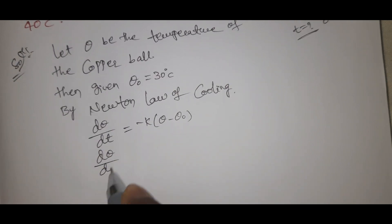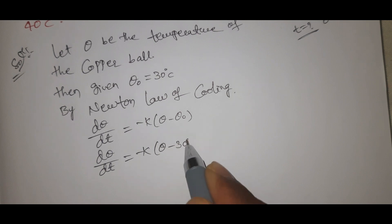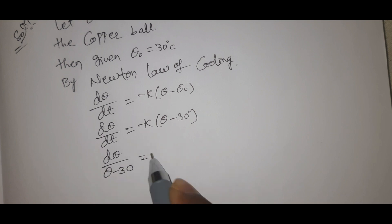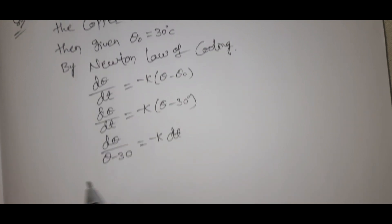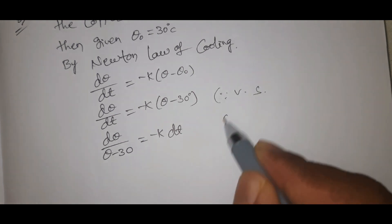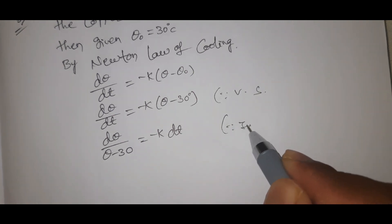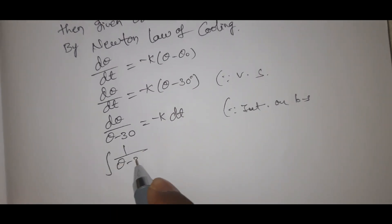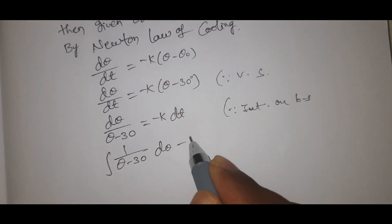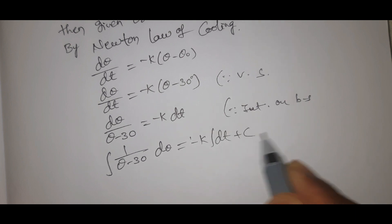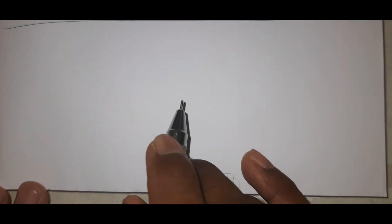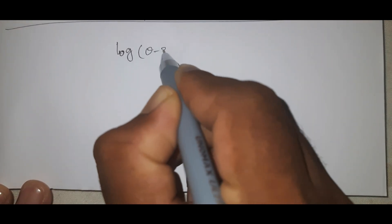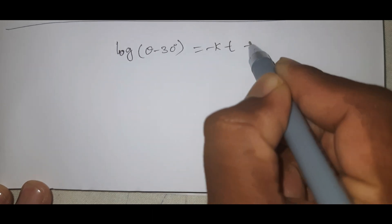So d theta by dt equal to minus k into theta minus 30. Using variable separable: d theta by theta minus 30 equal to minus k dt. Integrating on both sides, integral of 1 by theta minus 30 d theta equals minus k dt plus C. This gives log of theta minus 30 equal to minus kt plus C.